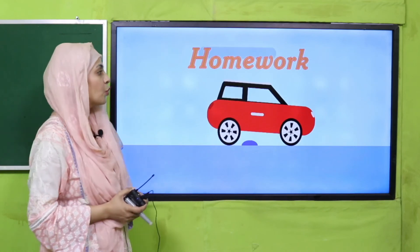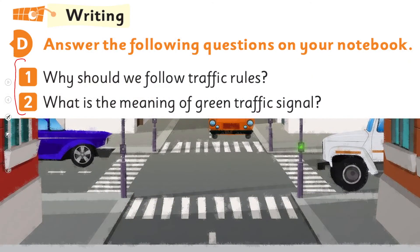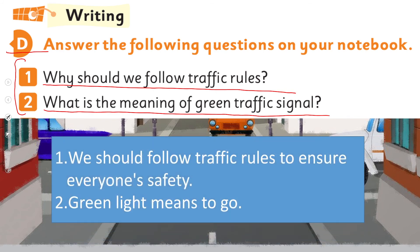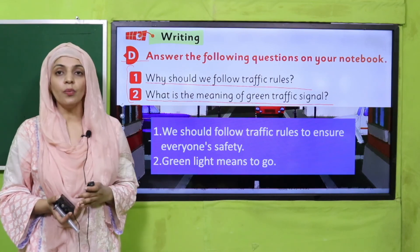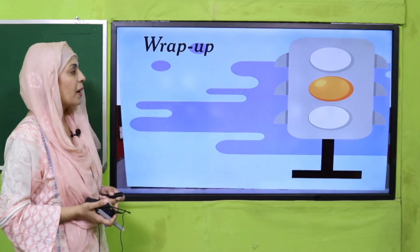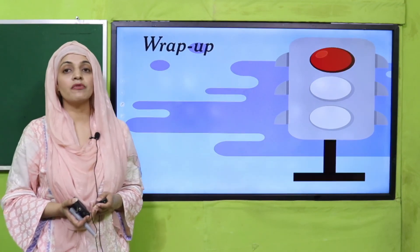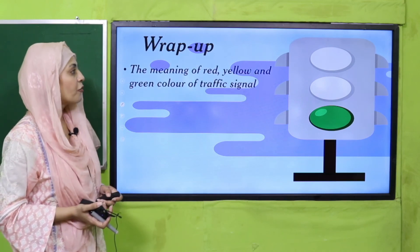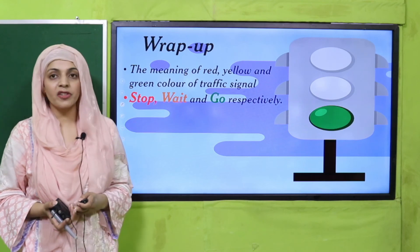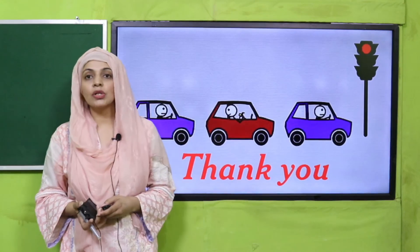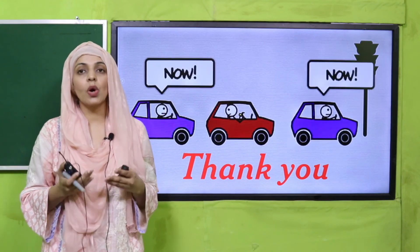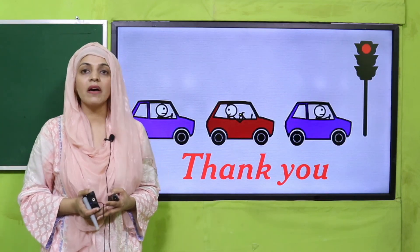For homework, answer questions one and two from Exercise D: Why should we follow traffic rules? What is the meaning of green traffic signals? We follow traffic rules to ensure everyone's safety — both our own and others'. Green light means to go. The wrap-up: today we learned about different traffic signs and signals. Red means stop, yellow means wait, and green means go. Perform all activities to understand traffic rules. Keep everybody around you safe. Have a good day, thank you!